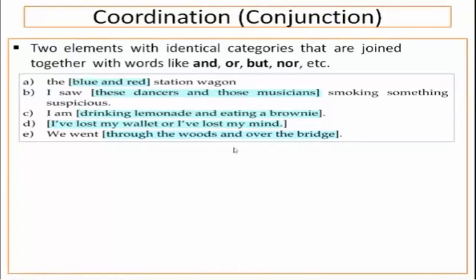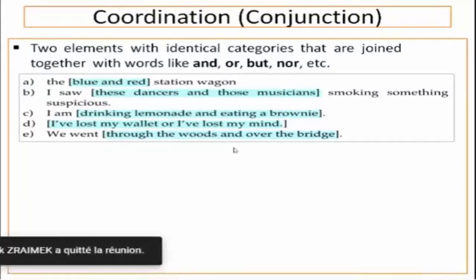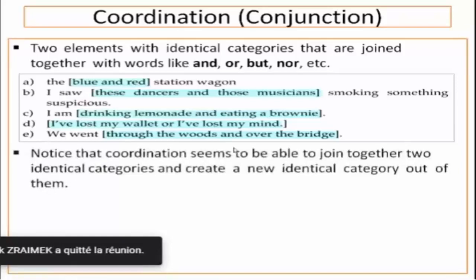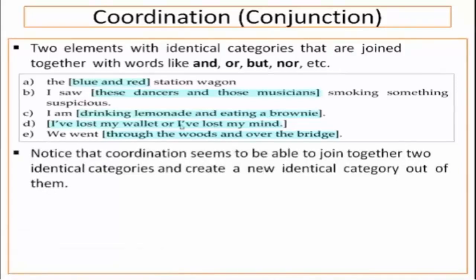We are going to generate a rule that applies to all of them. Notice that coordination seems to join together identical categories and create a new identical category out of them. By the way, we can conjoin only elements that belong to the same syntactic category. You cannot conjoin, for example, a verb and a determiner.